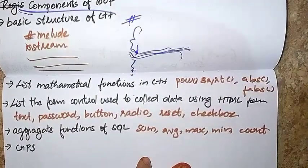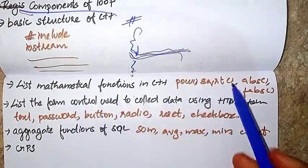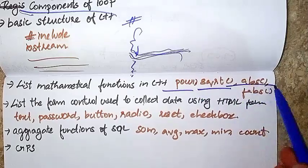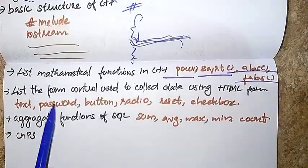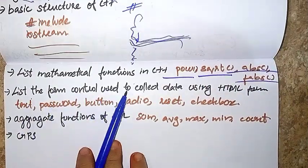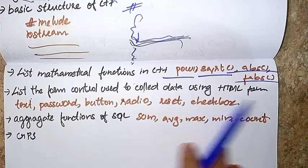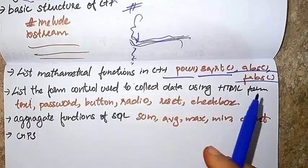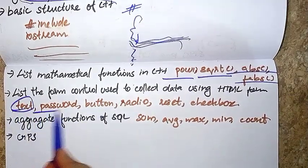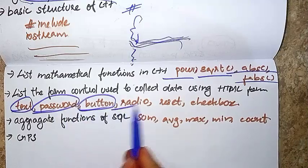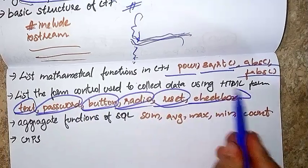Mathematical Functions in C++: Power, SquareRoot, Abs, Fabs. List the form controls used to collect data using the HTML form: Text, Password, Button, Radio, Reset, Checkbox.